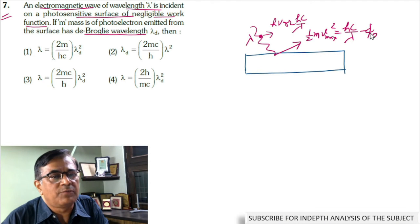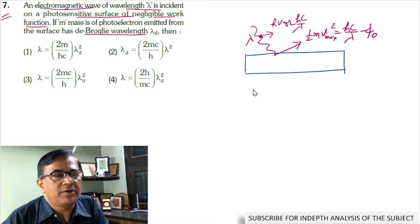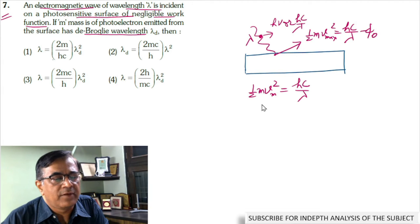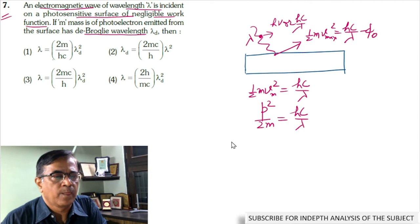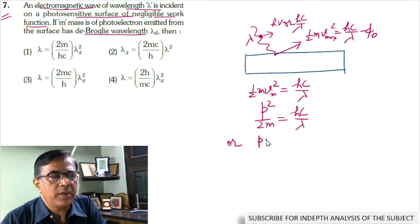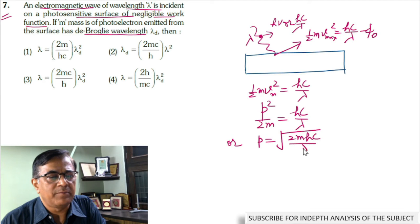According to the problem, work function is negligible. Hence, the relation can be rewritten as half m Vmax square equals Hc by lambda. This can be rewritten as P square by 2m equals Hc by lambda, or P equals square root of 2m Hc by lambda.